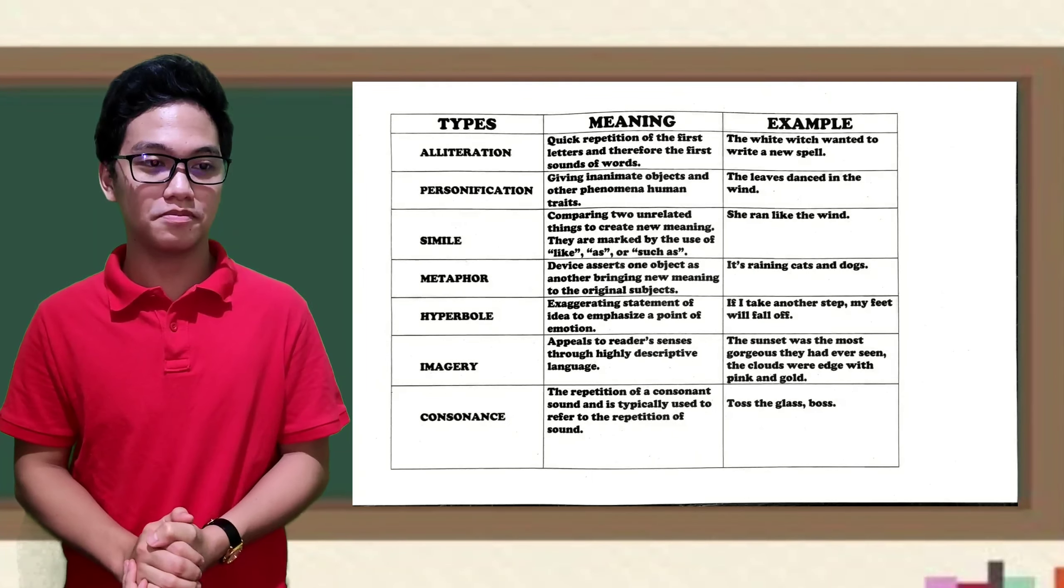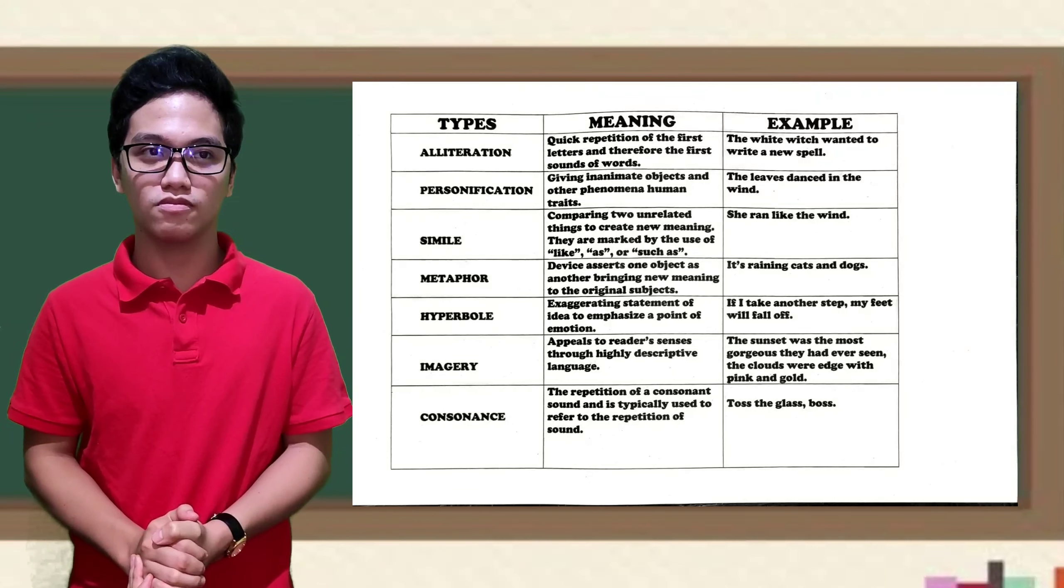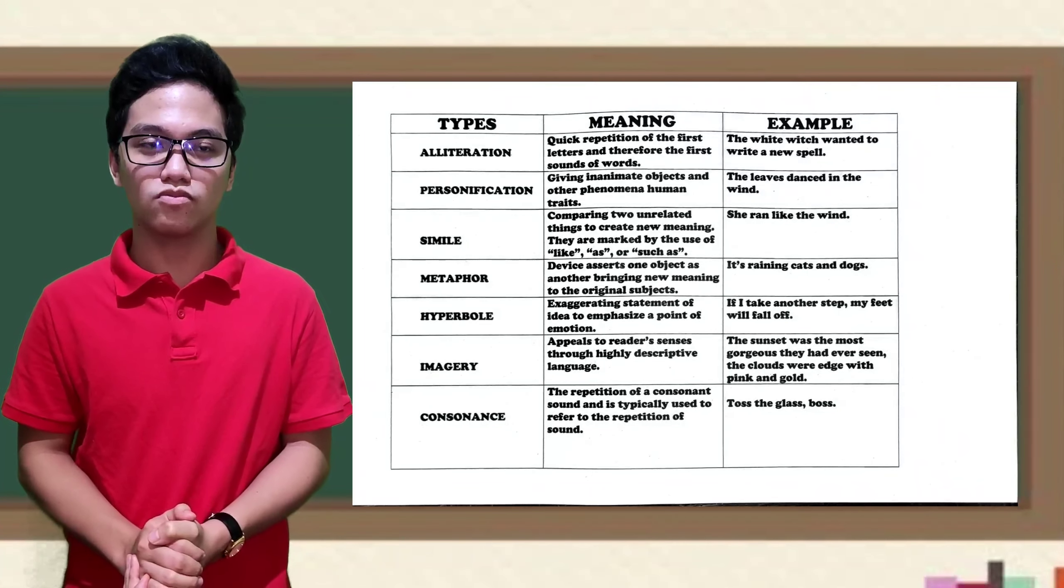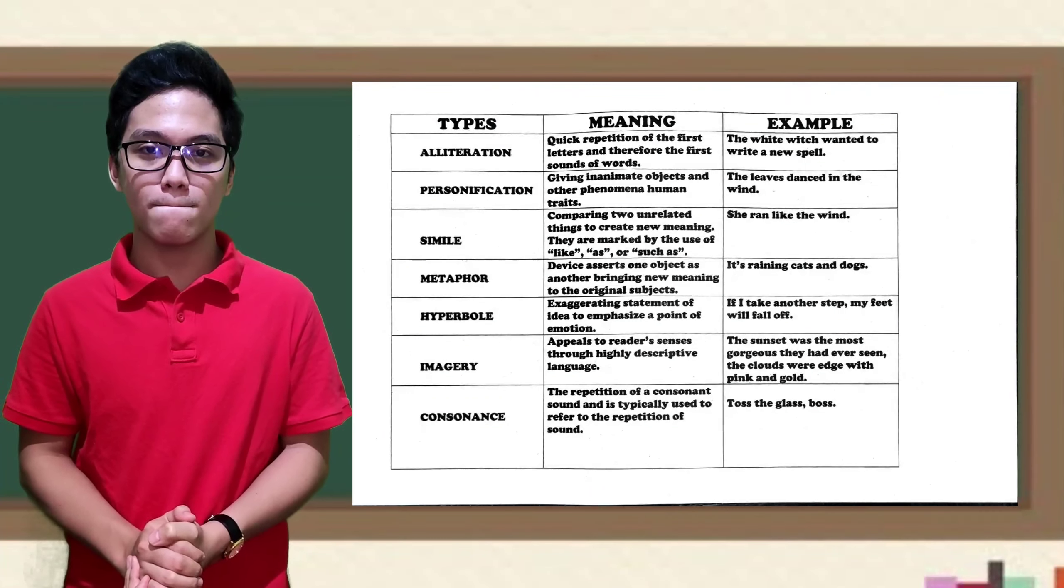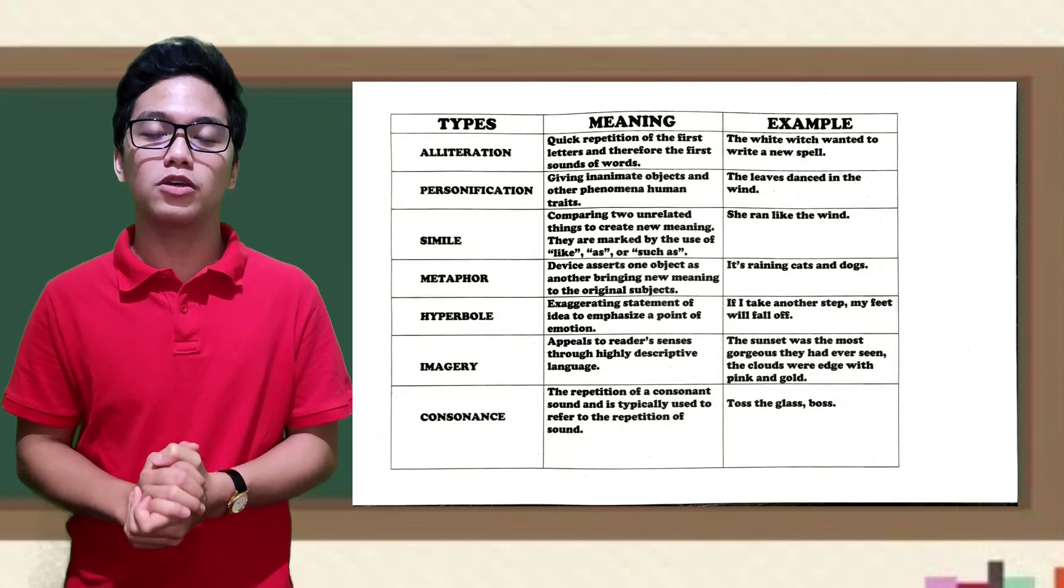Alliteration. It involves the quick repetition of the first letters and therefore the first sounds of words. Example, the white witch wanted to write a new spell. Okay, good.